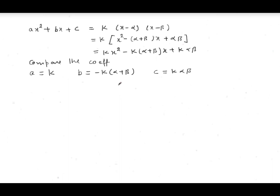From these, alpha plus beta equals minus b divided by k, and since k equals a, we get alpha plus beta equals minus b by a. Also, c divided by k equals alpha·beta, so c divided by a equals alpha·beta. Therefore, the sum of zeros equals minus b by a, and the product of zeros equals c by a.